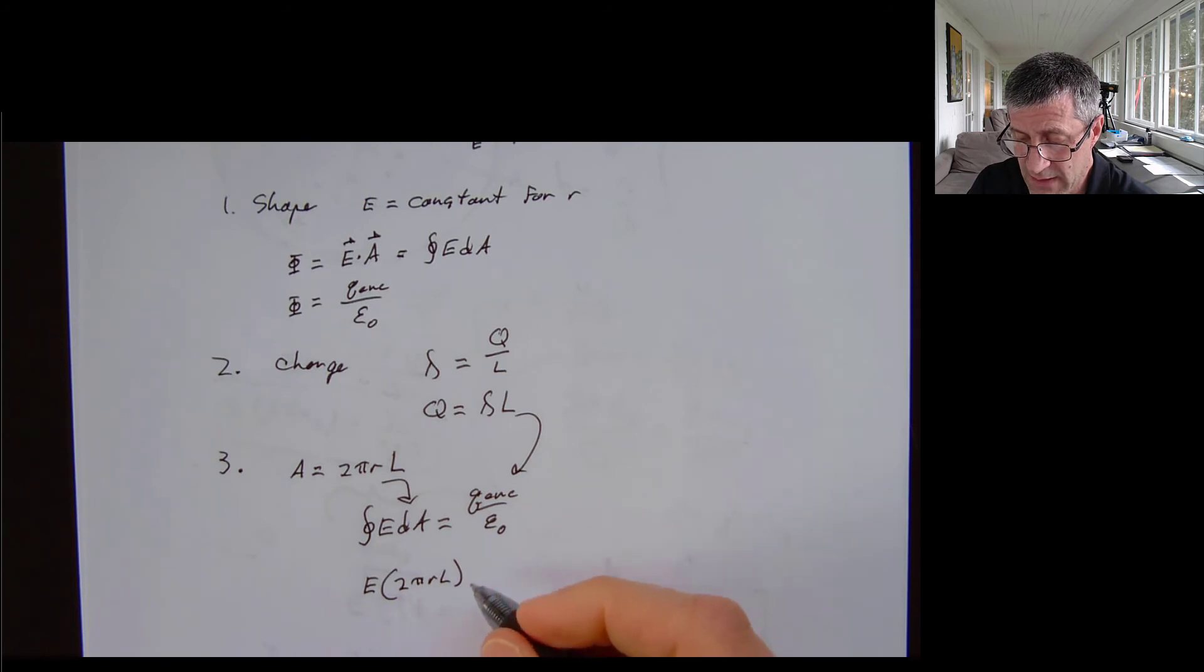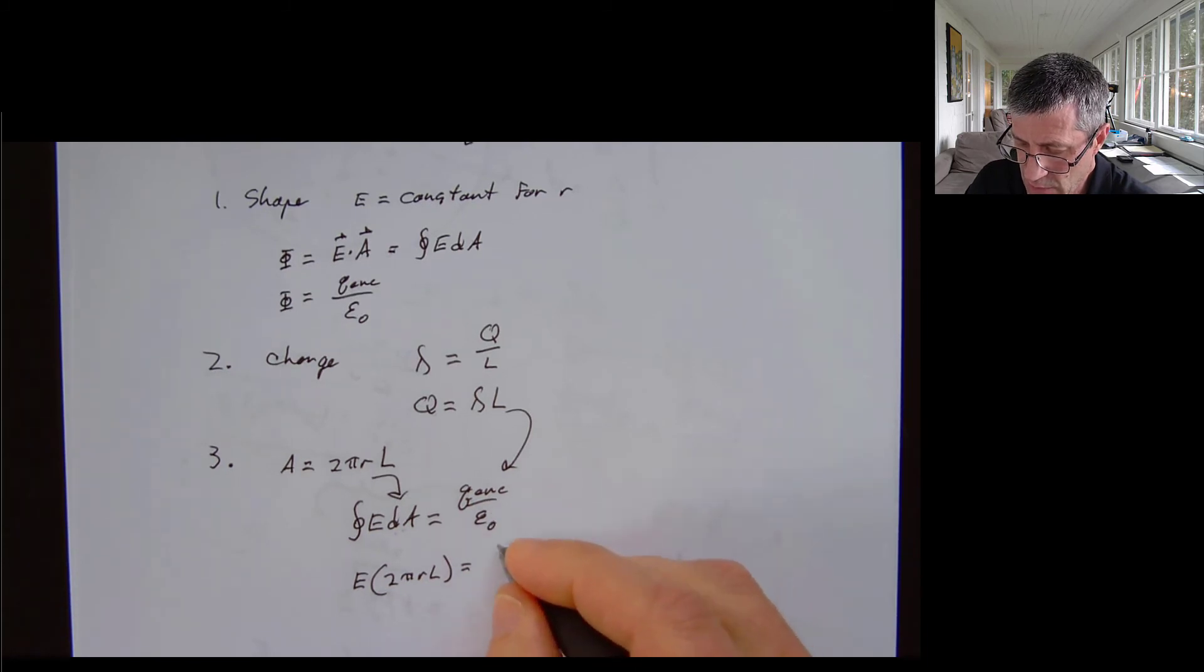So here I'm working on my two-dimensional Gaussian surface. My Q enclosed is going to be lambda times L over my constant epsilon naught.